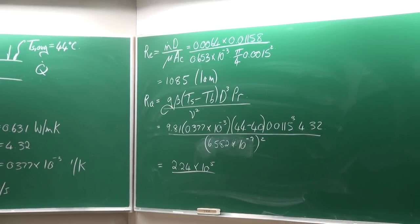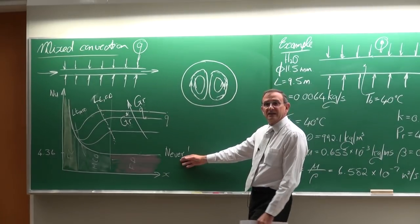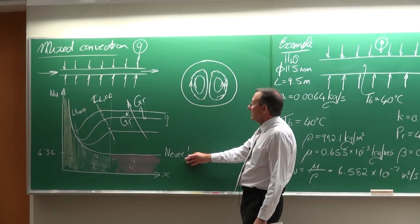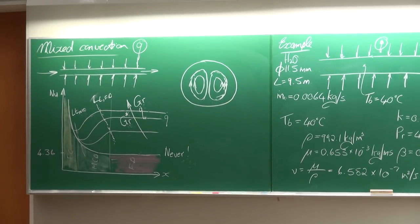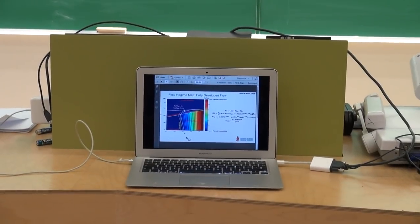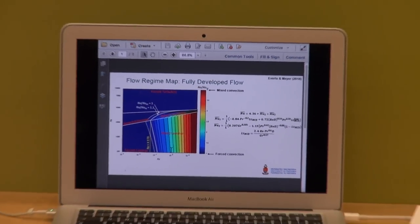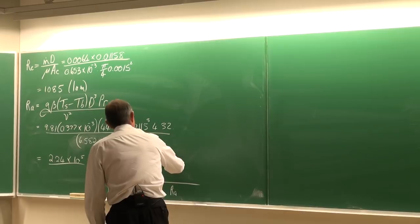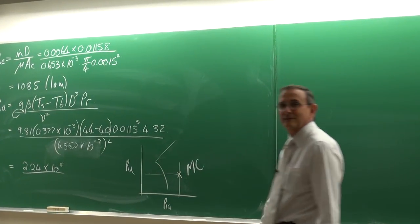Remember that when you have a constant heat flux case, you almost never get pure forced convection. You will be 99.99% correct if you assume it is mixed convection. Go and look at the chart — with a Reynolds number of 1,085 and Rayleigh number of 2.24×10⁵, you will see it is clearly mixed convection.